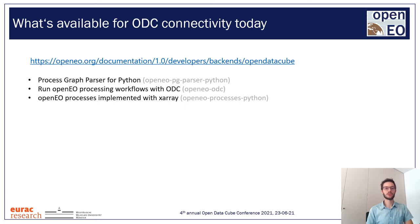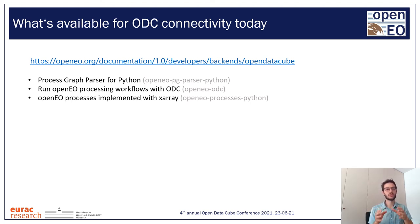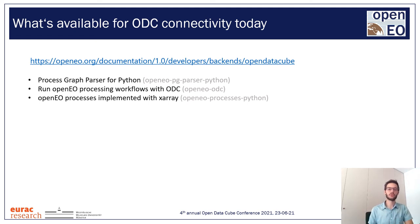You'll find all information about the connection between OpenDataCube and OpenEO at a dedicated address, where there are three main repositories involved. The ProcessGraph parser translates the JSON OpenEO ProcessGraph into a Python object. Then OpenEO-ODC translates this graph into a Python script using processes defined in the third repo — OpenEO Processes Python — where the actual XArray and Dask implementation lives.